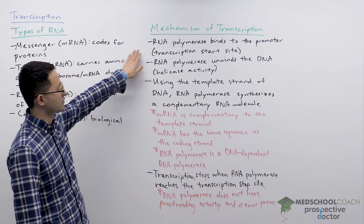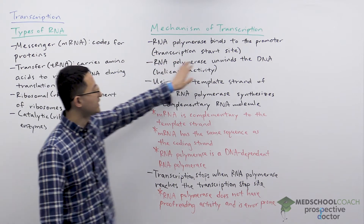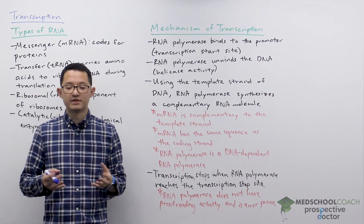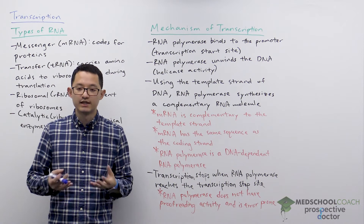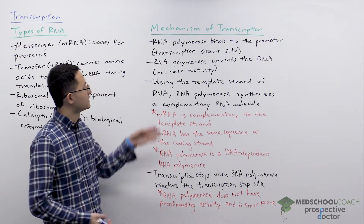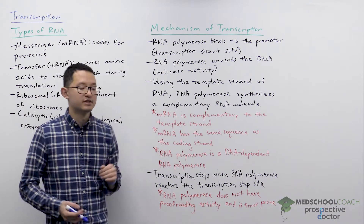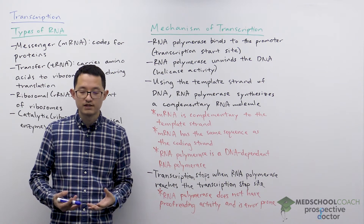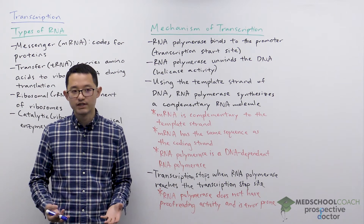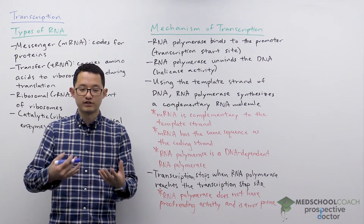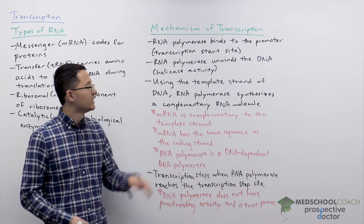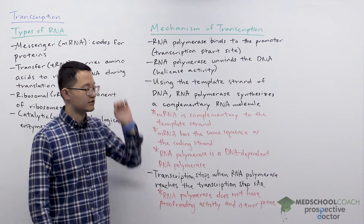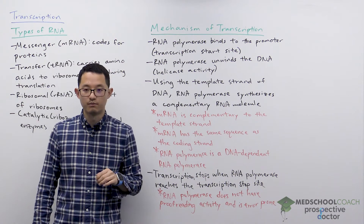RNA polymerase will start by binding to the promoter. The promoter is a specific sequence on the DNA that you can think of as the transcription start site. So if you want to express a particular gene — if you want to transcribe DNA into RNA — you need the RNA polymerase to first bind to the promoter.